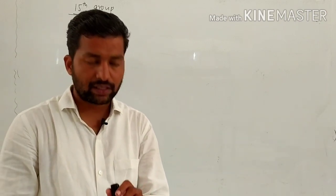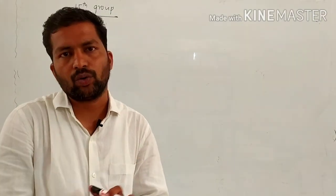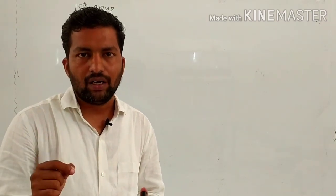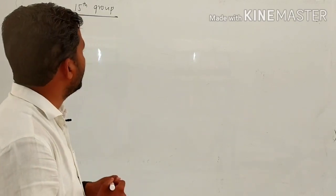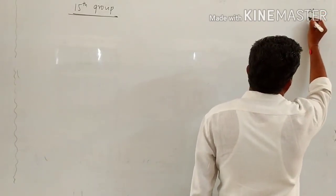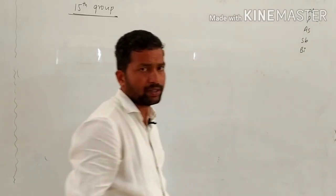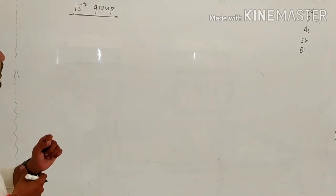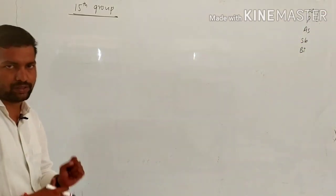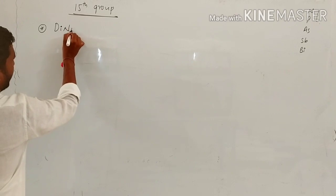Good morning students. Last class we covered the p-block elements of group 15 — the introduction, properties, and occurrence. We covered all the components: nitrogen, phosphorus, arsenic, antimony, and bismuth. Now we have all the nitrogen components.